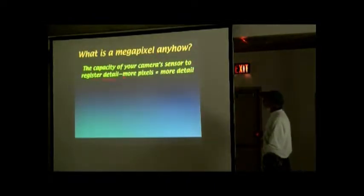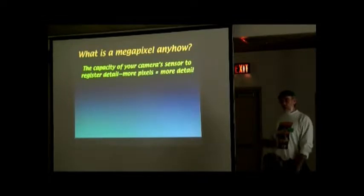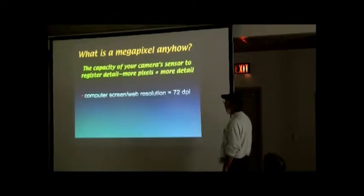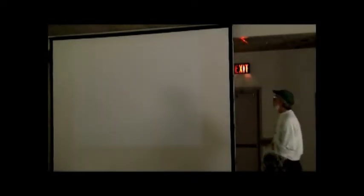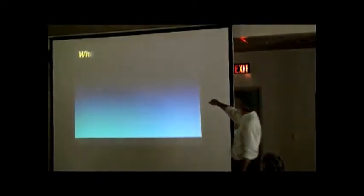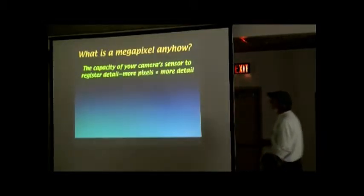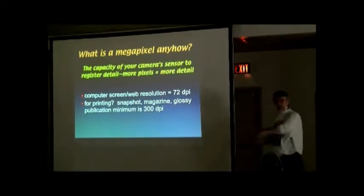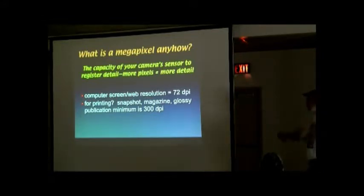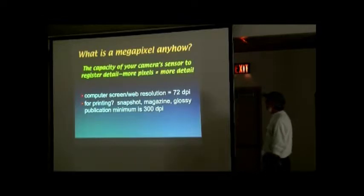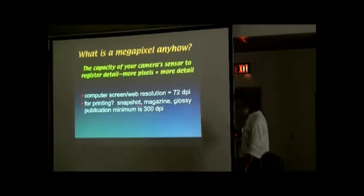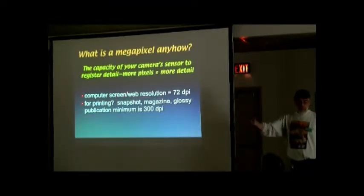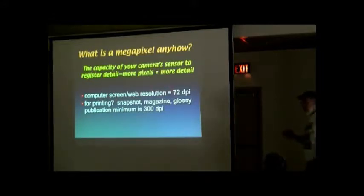What is a megapixel? The capacity of your camera determines the level of detail. More pixels means more detail, and more pixels means more money. Your computer screen resolution is 72 dots per inch — that's what the web shows. If you try to pull something off the web, you get a big pixelated mess because it's 72 DPI, which is very low. Print — snapshot, magazine, glossy publication — is 300 DPI. So if you're taking low-resolution JPEGs in your camera, you're limited to what you can do.